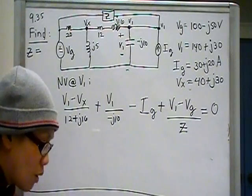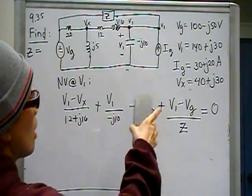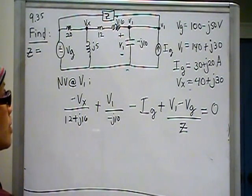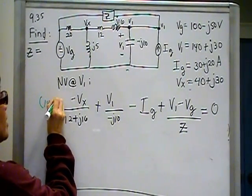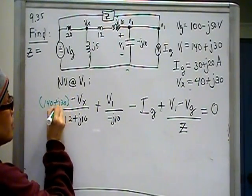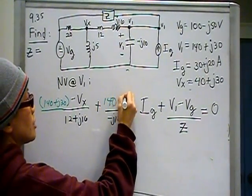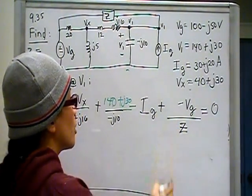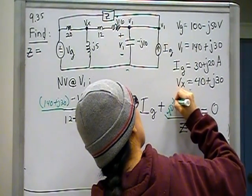Now we start substituting things in. V1, we know that v1 is 140 plus j30 because the book told us. So now I'm going to substitute that 140 plus j30. We've got 140 plus j30. Here's another 140 plus j30. And another one right here, which I'm going to write sideways because I don't have board space. So that's 140 plus j30.